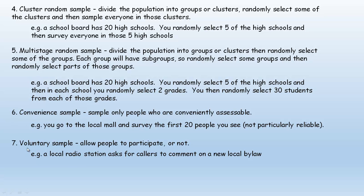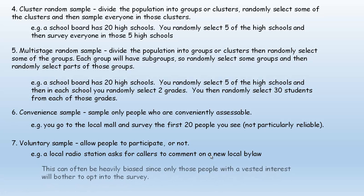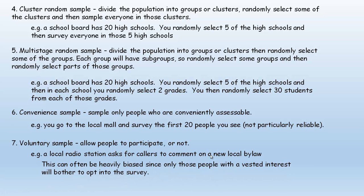Number seven: a voluntary sample is where you allow people to participate or not. For example, a local radio station asks for callers to comment on a new local by-law. This can often be heavily biased because only those people who have a vested interest are going to bother to call in or opt into the survey. Again, it's quick and doesn't cost much, but it might not be reliable.